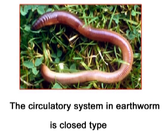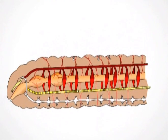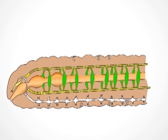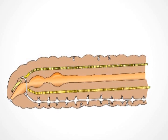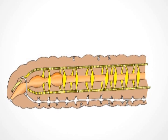The circulatory system in earthworm, with scientific name Megascolex, is of the closed type, as the blood passes through blood vessels. The circulatory system in earthworm consists of blood, blood vessels, and heart.